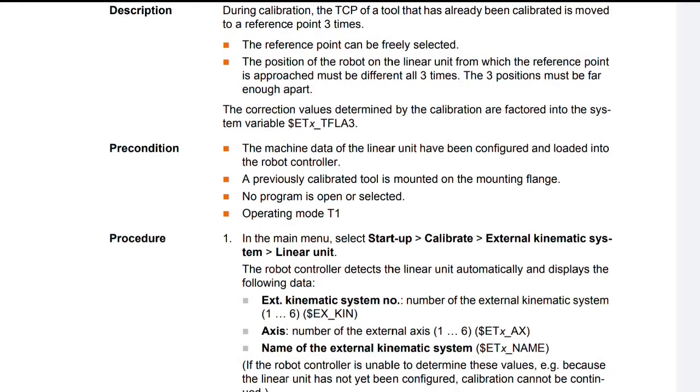Procedure. In the main menu, select Startup > Calibrate > External kinematic system > Linear unit. The robot controller detects the linear unit automatically and displays the following data.